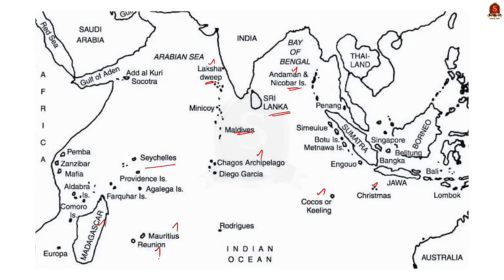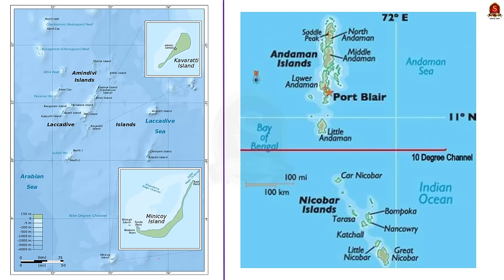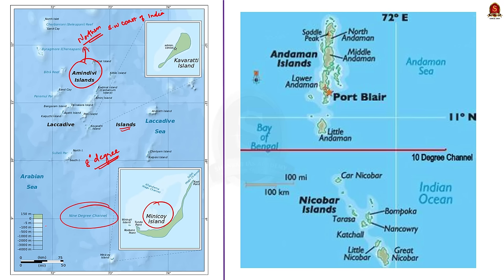Let us see a brief on some of the islands. Firstly, Lakshadweep Islands — it is the smallest union territory of India, located off the south-western coast of India. It consists of an archipelago of 36 islands. Amindivi Islands are the northernmost while Minikoy Island is the southernmost. The 8-degree channel separates Minikoy from the Maldives, and the 9-degree channel separates Minikoy from the mainland of the Lakshadweep Archipelago. Remember, Minikoy is the largest island in this group.